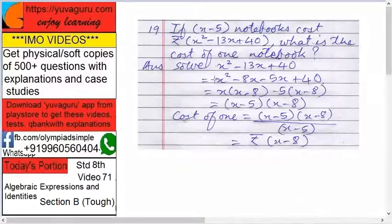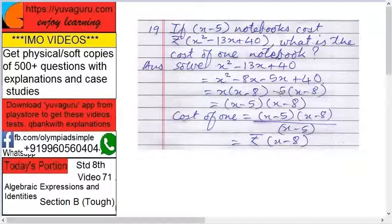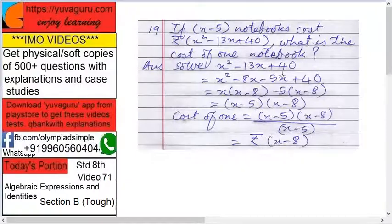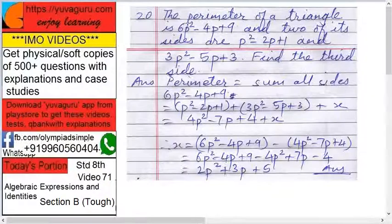Factoring x²-13x+40: split as x²-8x-5x+40, giving x(x-8) minus 5(x-8), which equals (x-5)(x-8). So the cost of one notebook equals (x-5)(x-8) divided by (x-5). The (x-5) cancels, and the cost of one notebook is x minus 8. You can also do this by the division method.